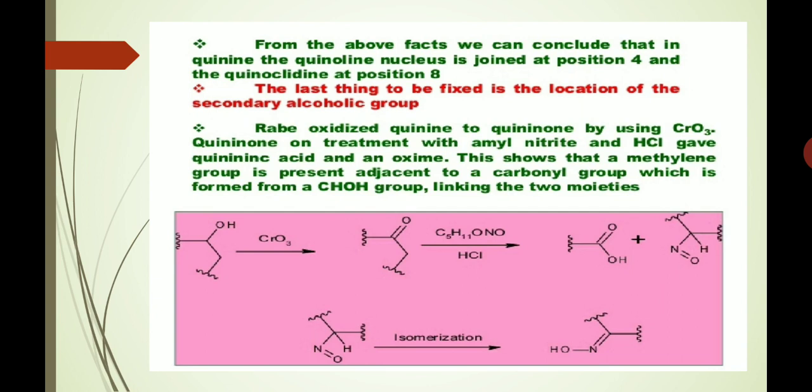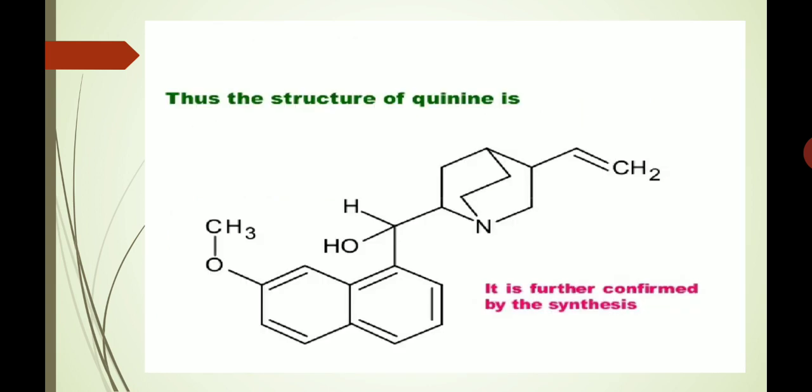From the above facts, we can conclude that in quinine the quinoline nucleus is joined at position 4 and the quinuclidine at position 8. The last thing to be fixed is the location of the secondary alcoholic group. On oxidation of quinine to quinineone by using CrO3, quinine on treatment with amyl nitrite and HCl gave quininic acid and an oxime. This shows that the methylene group is present adjacent to a carbonyl group, which is formed from a CHOH group linking the two moieties. Thus, with the help of the foregoing reactions, the structure of quinine is as represented in this diagram, and this structure is further confirmed by its synthesis.